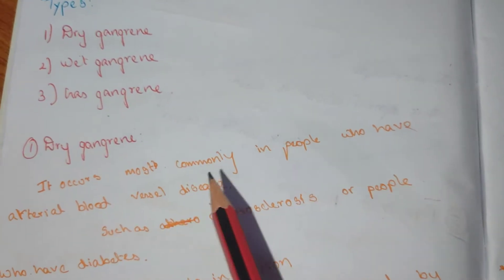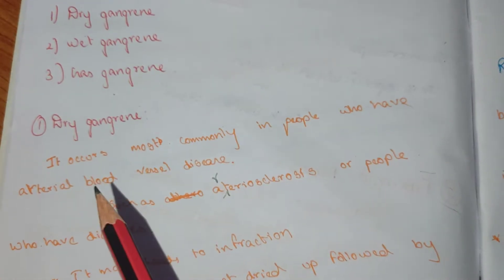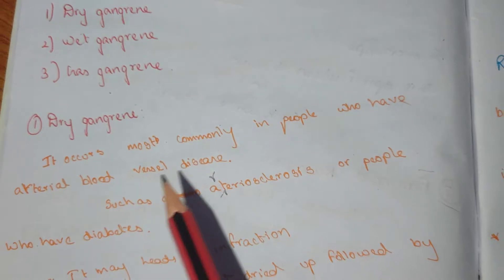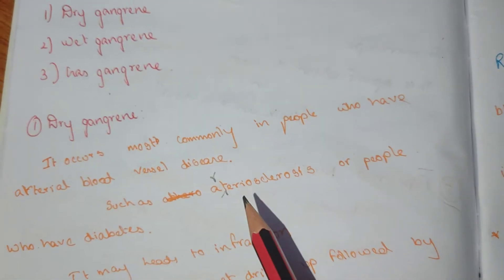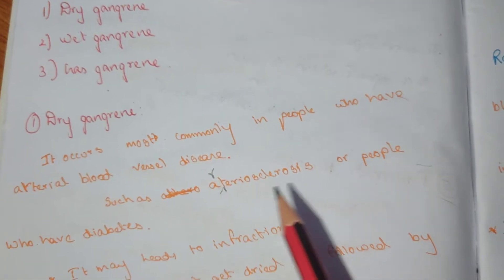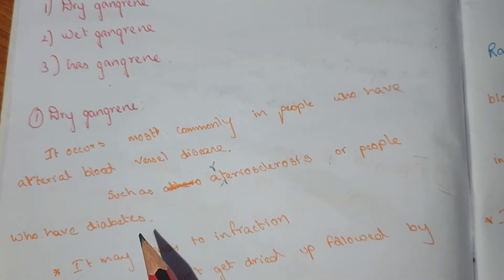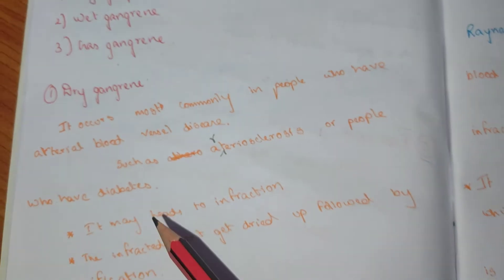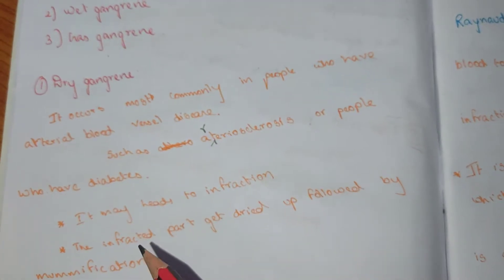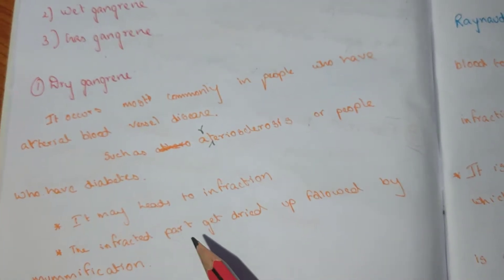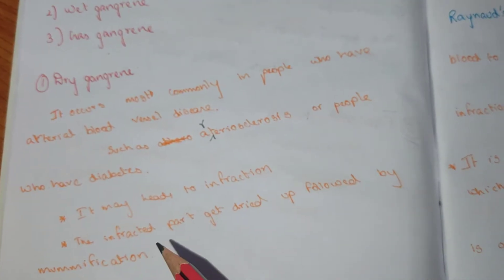Dry gangrene occurs most commonly in people who have arterial blood vessel disease such as arteriosclerosis, or people who have diabetes. It may lead to infarction; the infarcted part gets dried up followed by mummification.